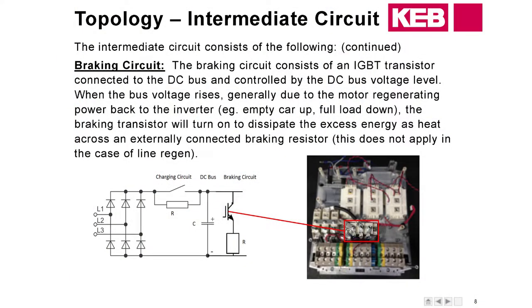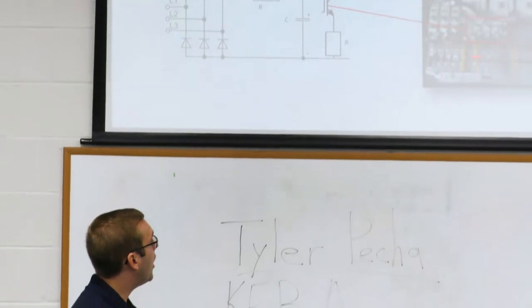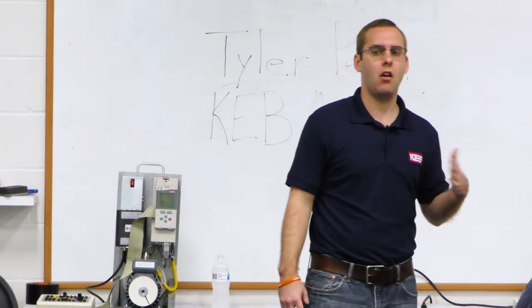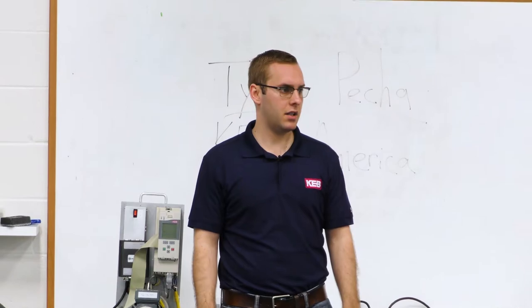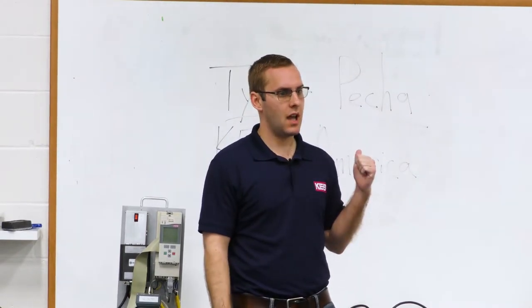Continuing on with the intermediate circuit, we feature our braking circuit internal to the drive. The braking circuit contains the braking transistor, which turns on and off when your DC bus rises to a certain level. Some drives feature the transistor on the outside, but ours is on the inside to help create a more compact footprint. If you're using a braking resistor to dissipate excess DC bus voltage, this transistor turns on and off to dump that extra voltage across the resistor. If you are using a regen, this will not be active.